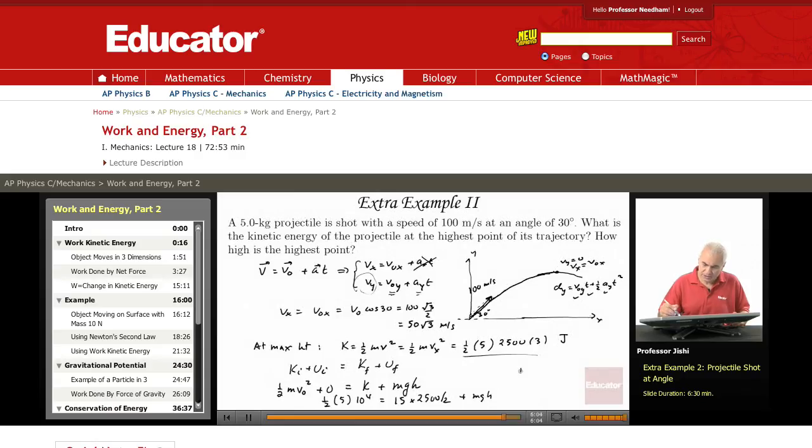So h is simply—you take it to this side—you get 2.5 × 10⁴, and here you get minus 15 times 1250, divided by mg, which is 5 times 9.8, in meters. So that's the maximum height.